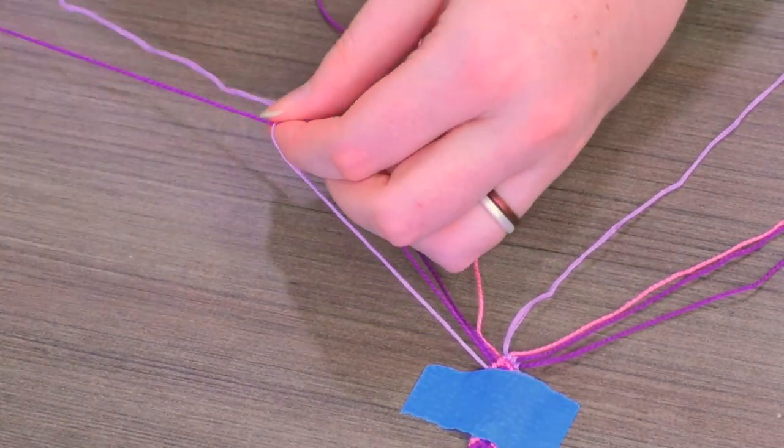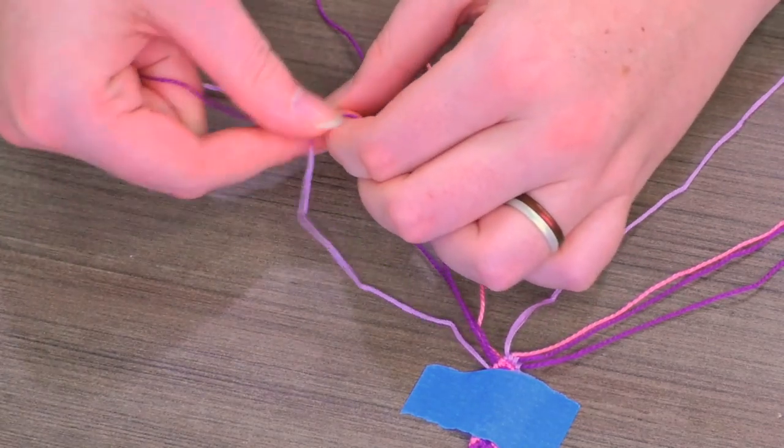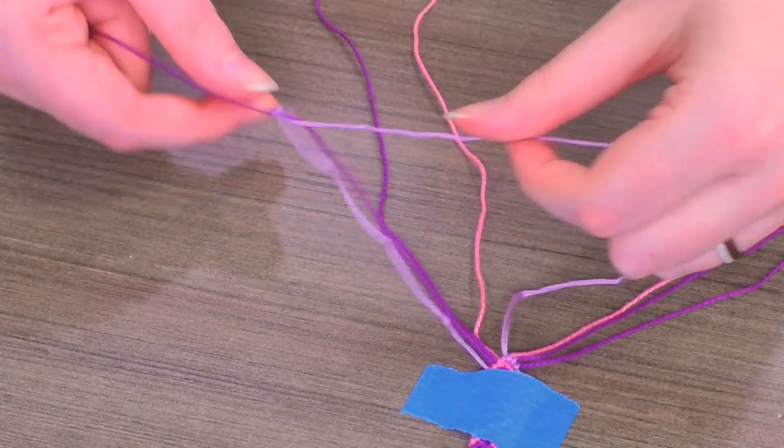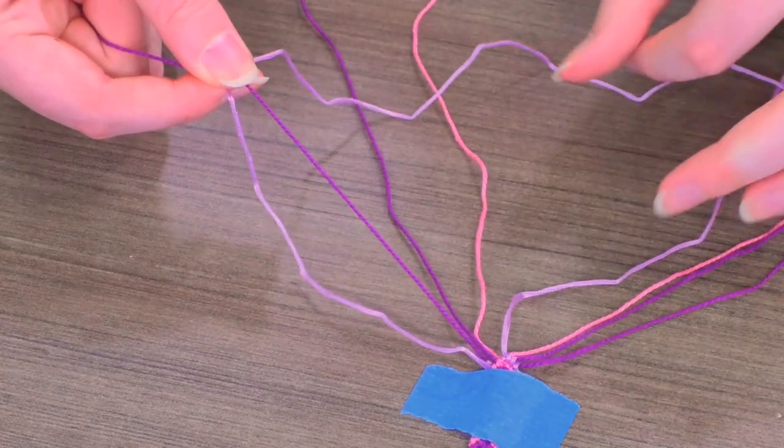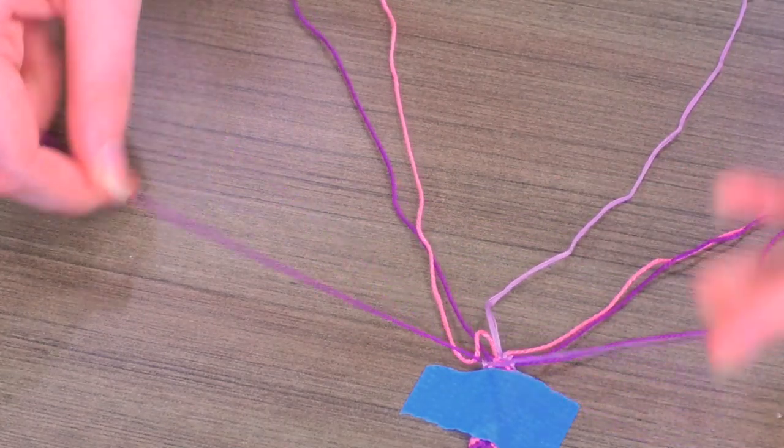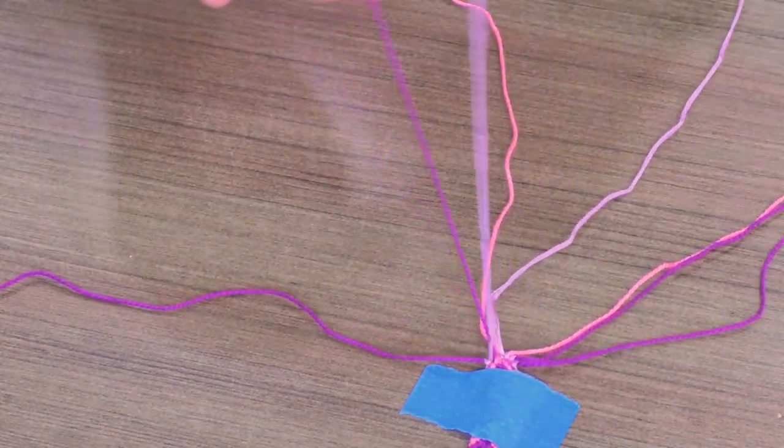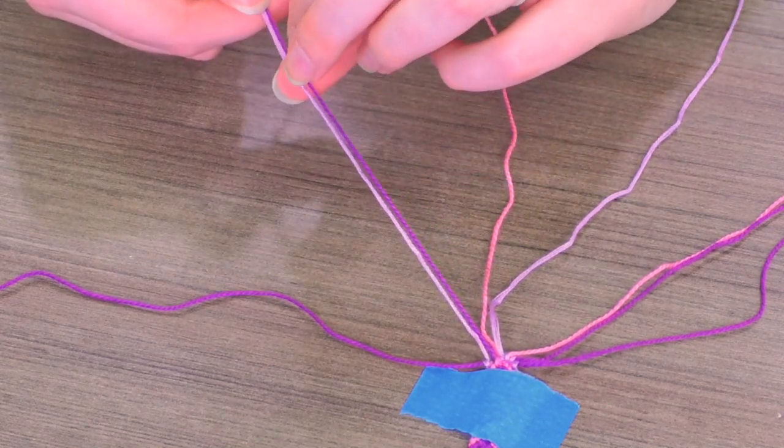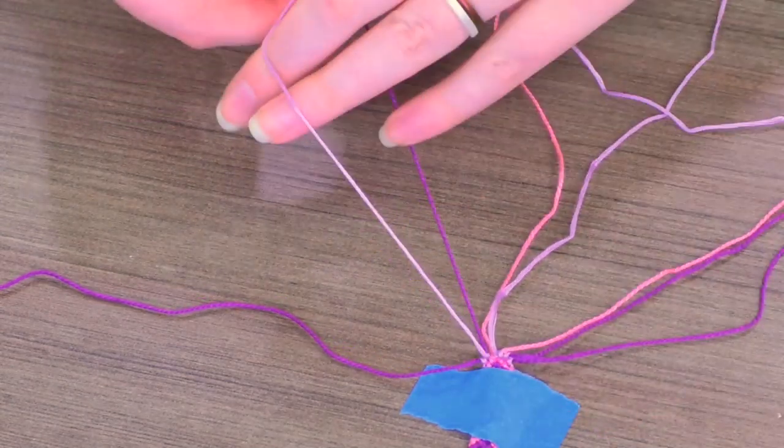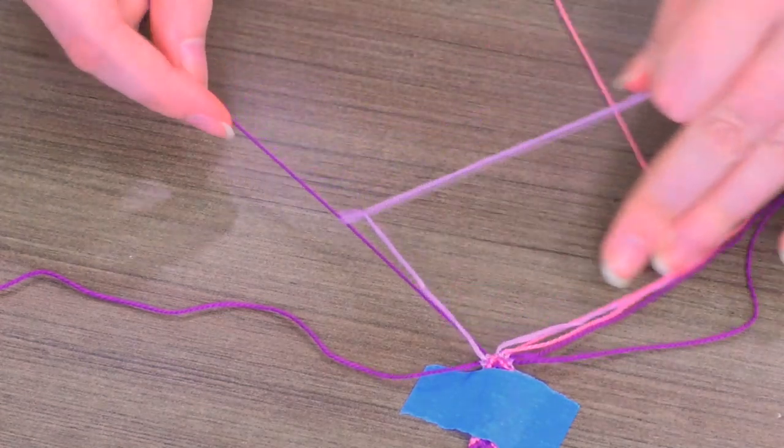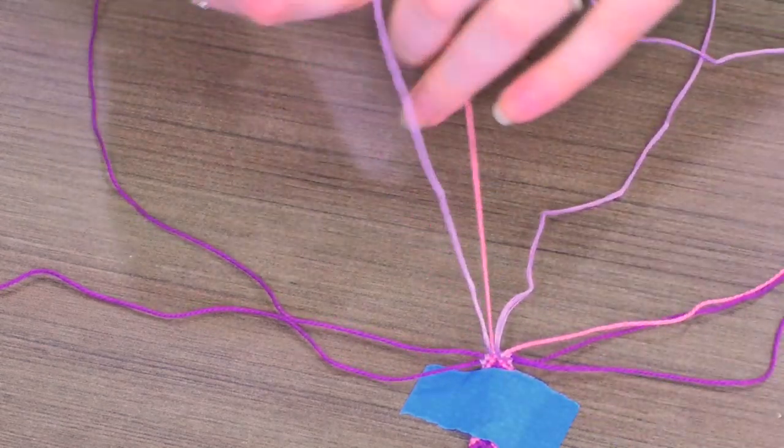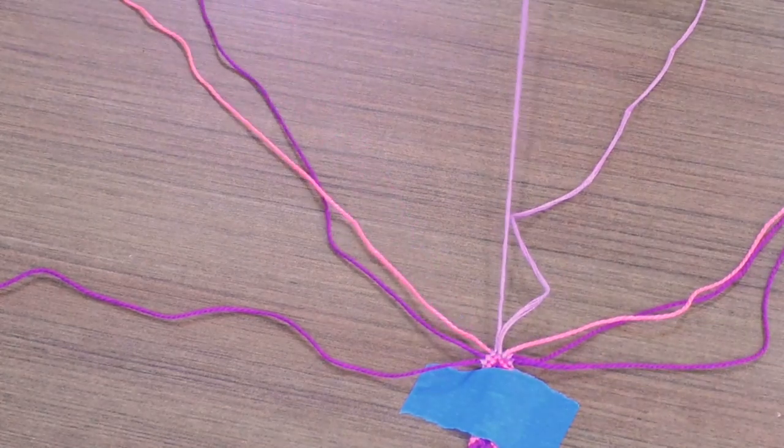You basically do it just the reverse. Same knot but going the other direction. So I've created my now like backwards four. Go around and up. Next string.